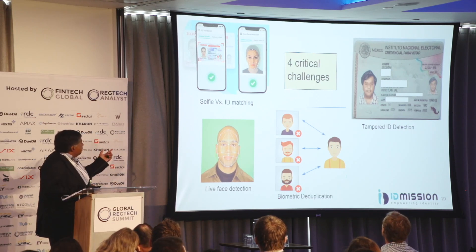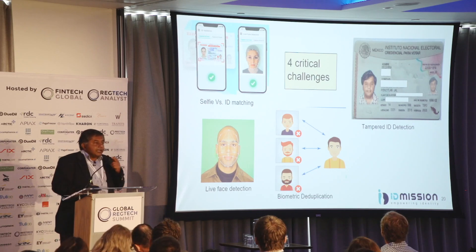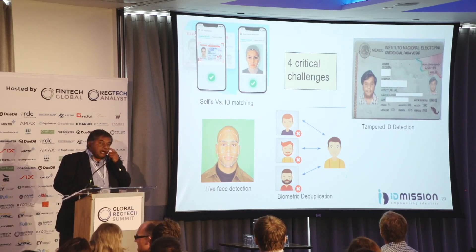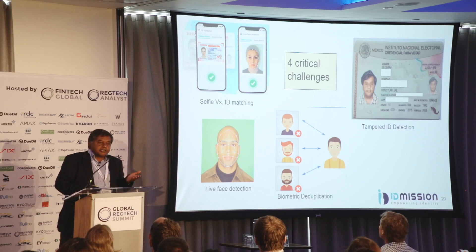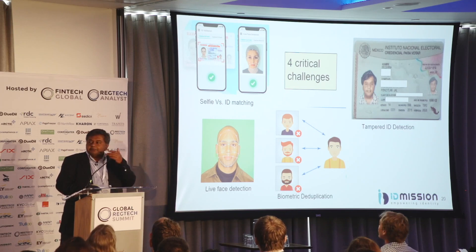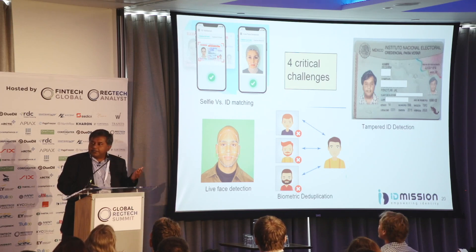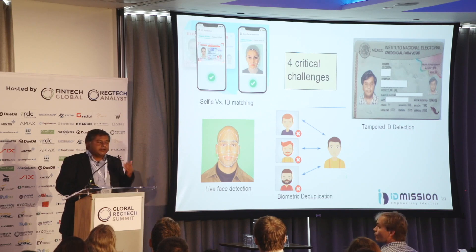The second big problem is making sure that the person sitting on their couch at home is actually a person — they're not taking a selfie of another photograph. How do we detect liveness?